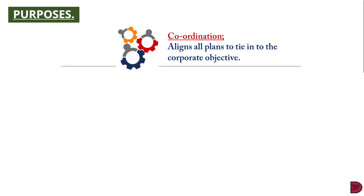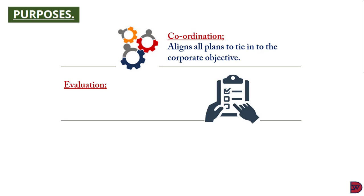The fourth purpose is coordination. The budget allows synergy for all objectives of the various departments and ensures they tie into the overall plan of the business. For example, the sales department's budget will have to be coordinated with the production department to manufacture the right quantity and quality to meet the sales budget. The accounting department will also have to provide the requisite funds to ensure the production department meets operations necessary for products to be available for the sales department.